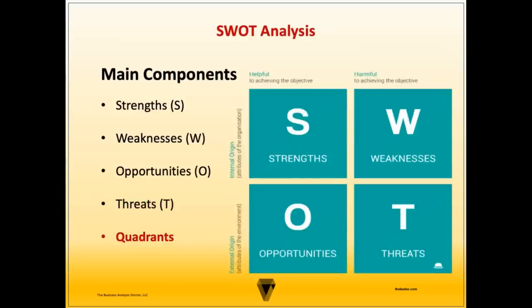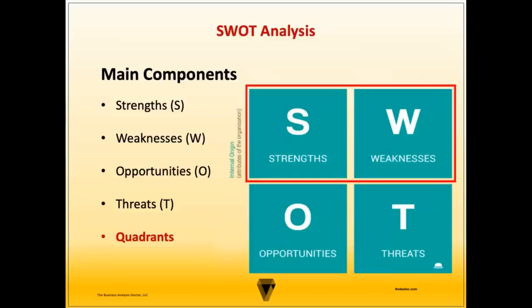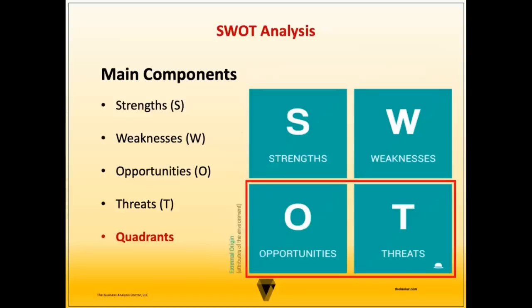Quadrants. As you can see, there are four quadrants that compose the SWOT, and four categories from which each of the quadrants is derived. Internal quadrants are those the organization has direct control over, and therefore are more actionable — this includes strengths and weaknesses. External quadrants are those the organization has no direct control over and can only be monitored — these include opportunities and threats.